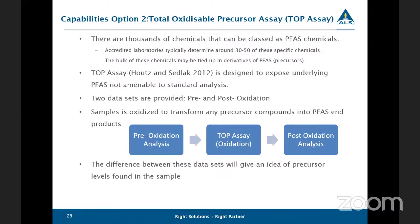The second analytical option is the total oxidizable precursor assay, sometimes referred to as the TOP assay. As mentioned, there are believed to be thousands of compounds considered to be PFAS chemicals, and most commercial labs are only analyzing between 30 to 50 of these. So in order to get a better picture of the total PFAS pool, this method was developed by Houts and Sedlak in 2012. The idea is to model or predict how these larger PFAS precursor compounds will behave in the environment, at a more accelerated lab scale approach. With this method, you get two data sets — pre and post-oxidization. The sample is analyzed as-is, then oxidized to transform any precursor compounds into PFAS end products, and then analyzed again.